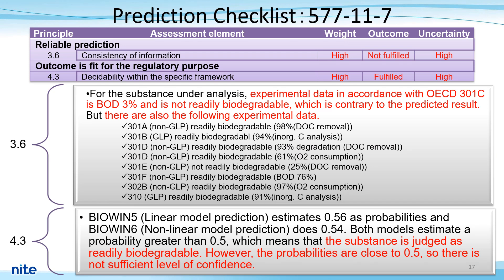For 3.6, this item evaluates the consistency of information when multiple model predictions are used to predict the property of interest, and when additional information on the same or related properties such as measured values are used. For the substance analyzed in this study, the BOD experimental data according to OECD 301C is 3%, which is not readily biodegradable and is contrary to the predicted results. Because of several contradictory experimental data from OECD test guidelines 301B, 302, and 310, we concluded not fulfilled as outcome and high as uncertainty.